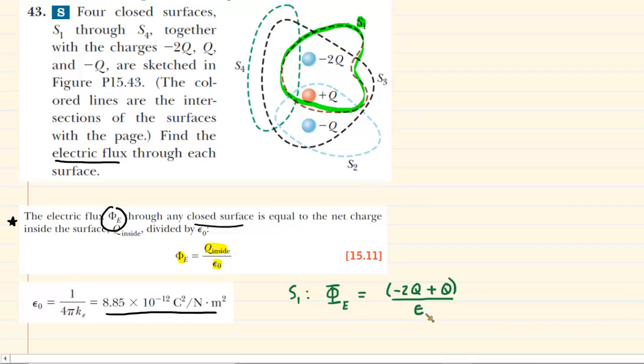Which I am struggling to draw right now. So let's try that again. Hopefully, that's good enough. So if we add negative 2q and 1q, we're going to get negative 1q, or just negative q. And then that would be divided by that constant. And that would be the answer for the electric flux through surface 1.